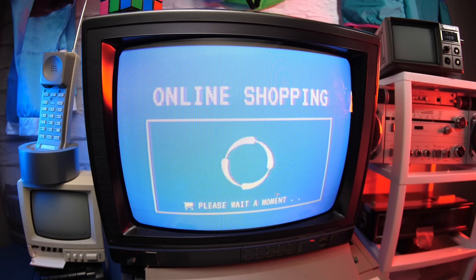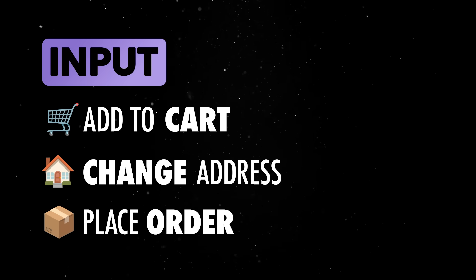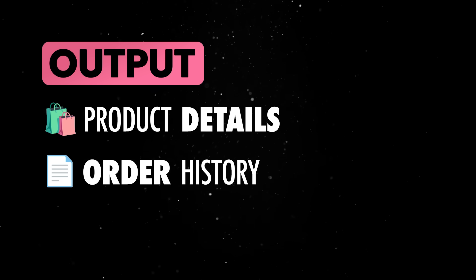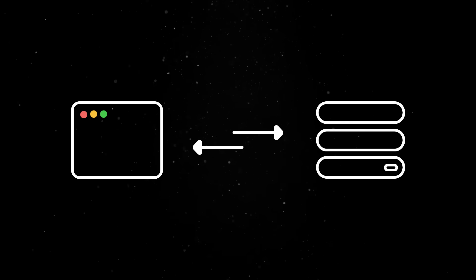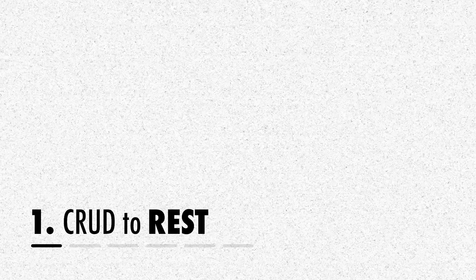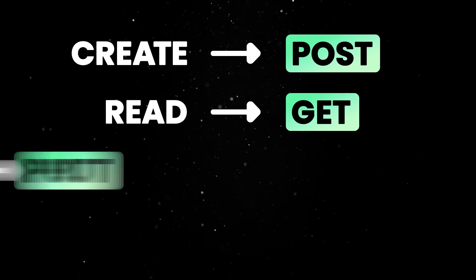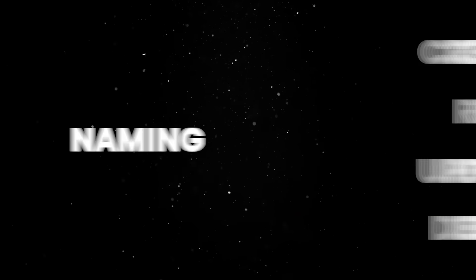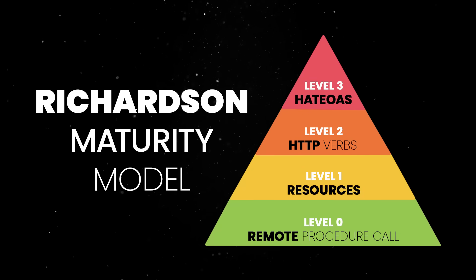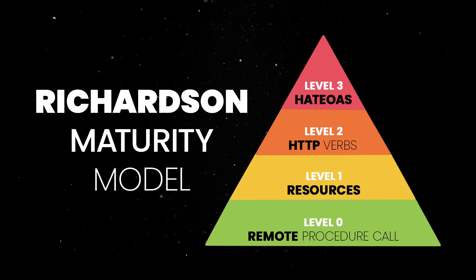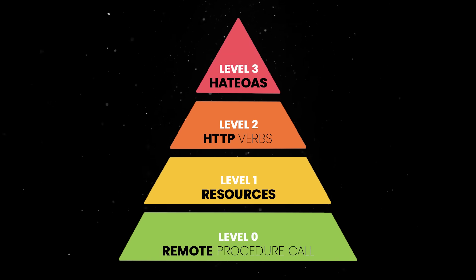Imagine you are designing an API for an e-commerce platform. An input could be a customer adding an item to their cart, updating their shipping address, or placing an order. Outputs are what the API returns in response to queries, like fetching product details, retrieving a user's order history, or checking the current stock of an item. At its core, an API allows clients like web or mobile apps to consume and modify data from a database. Well-designed APIs map database operations to clear and predictable endpoints that follow RESTful principles. Remember that naming consistency is key when defining these endpoints. Following well-established standards, such as the Richardson Maturity Model, makes your API more intuitive and easier to work with, especially for new developers.